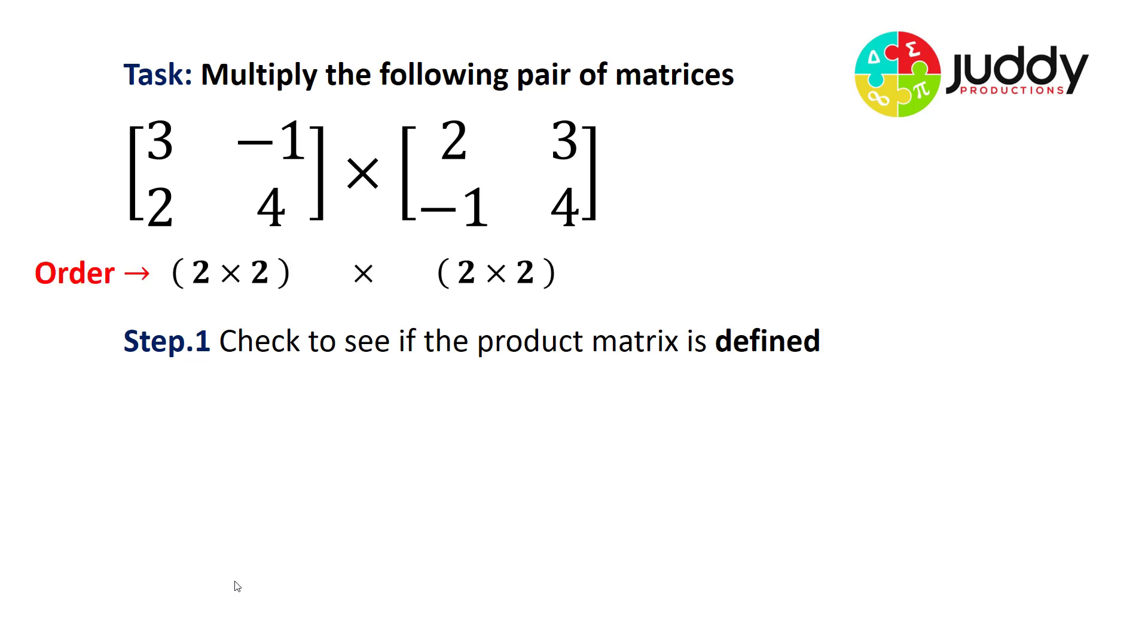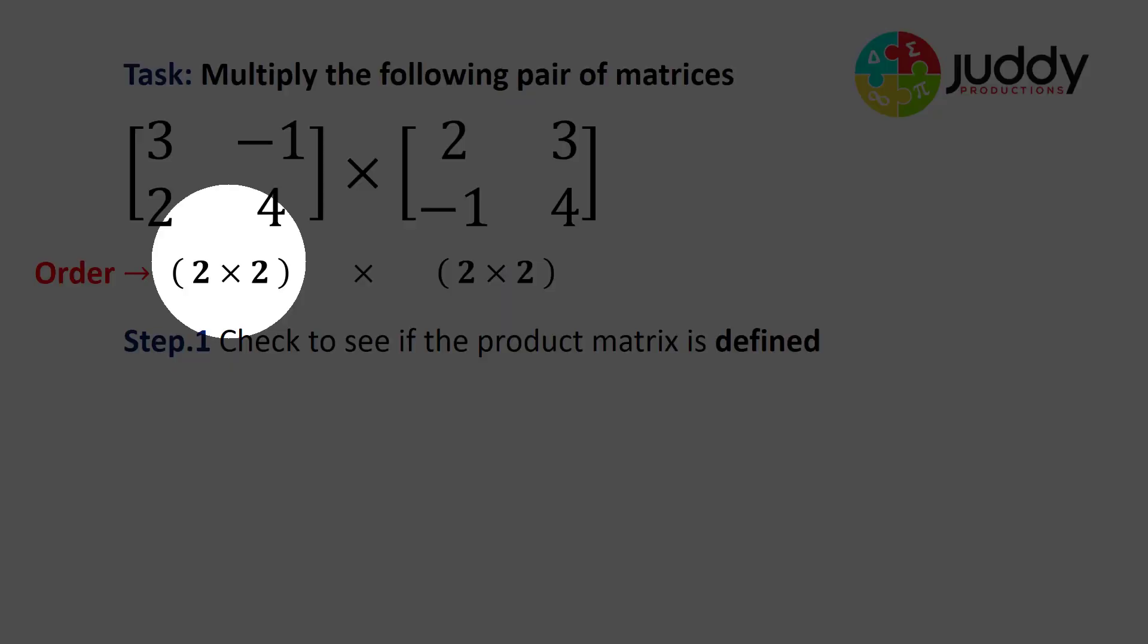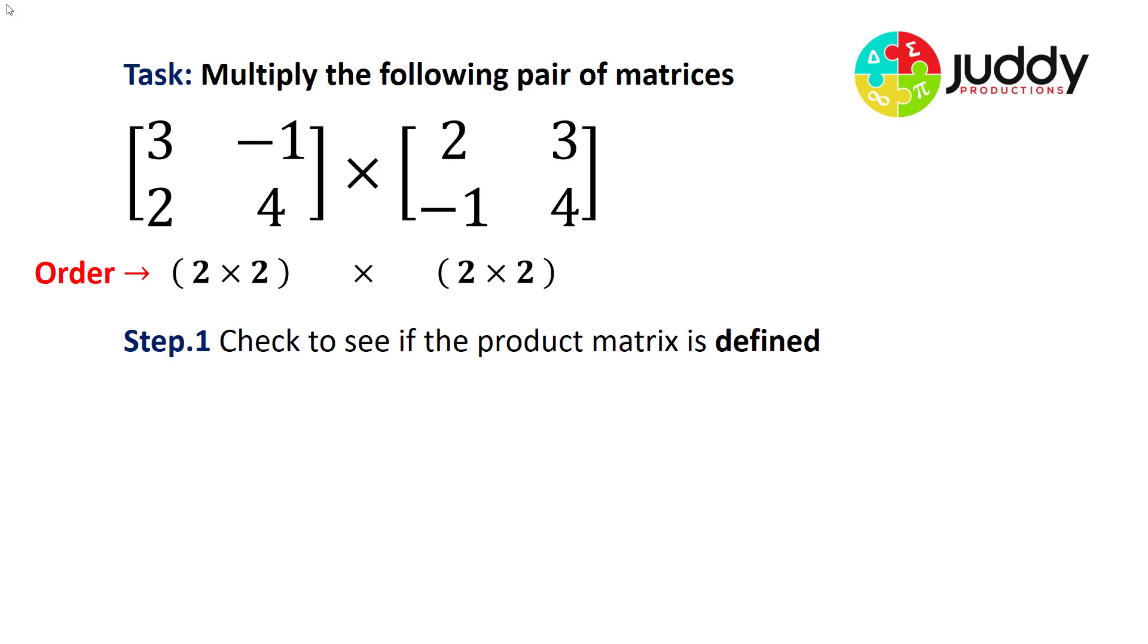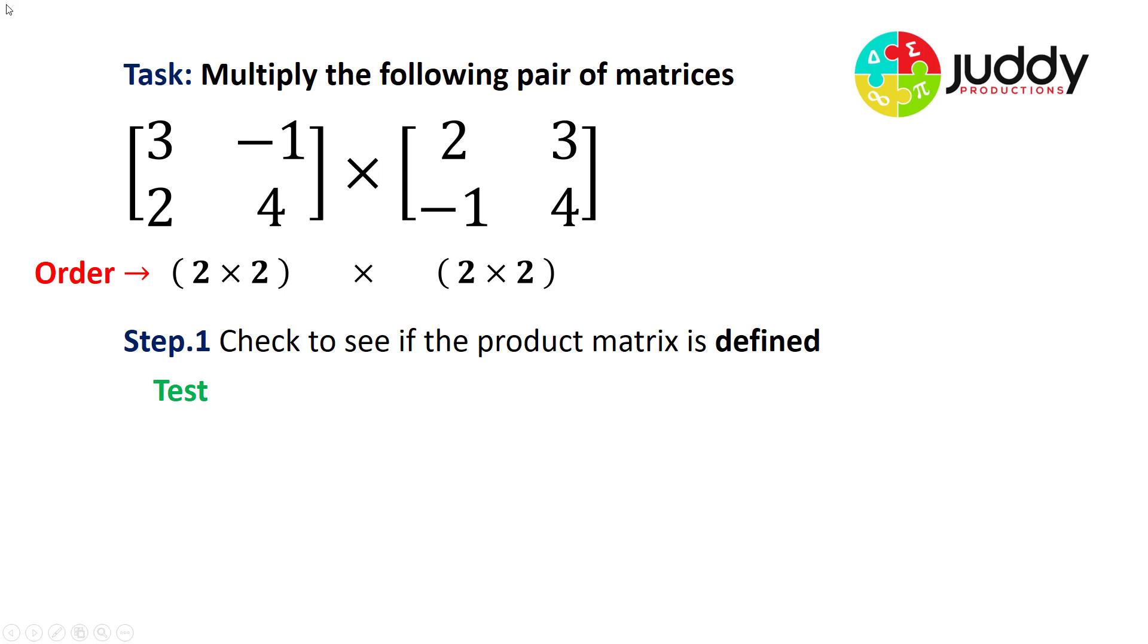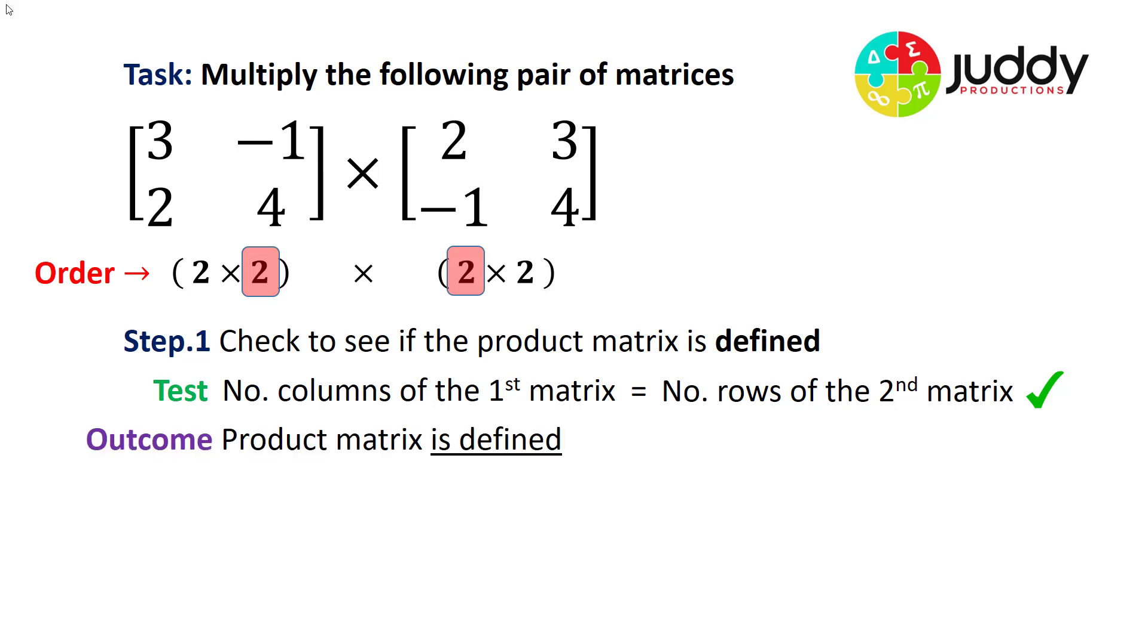Let's examine first of all the order. The order of the first matrix is two by two and the order of the second matrix is two by two. So to test if they can be multiplied and whether the product matrix is defined, let's examine the number of columns in the first matrix and the number of rows in the second matrix. Now if they're equal then they can be multiplied together, and in this case they can. We have two columns in the first matrix and two rows in the second matrix. So the product matrix is defined.